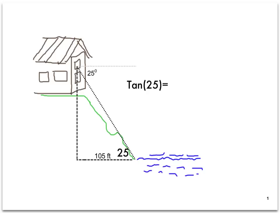So tangent of 25 degrees equals opposite over adjacent. So tangent of 25 degrees is x over 105.